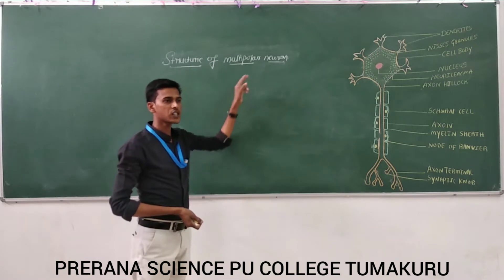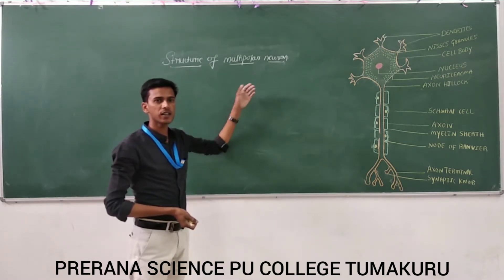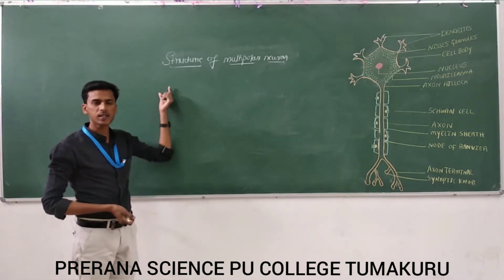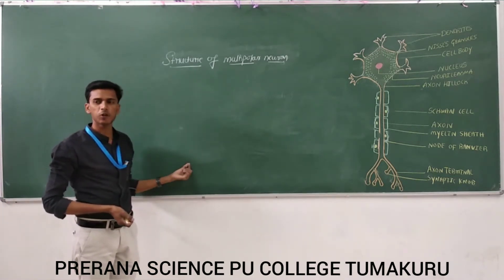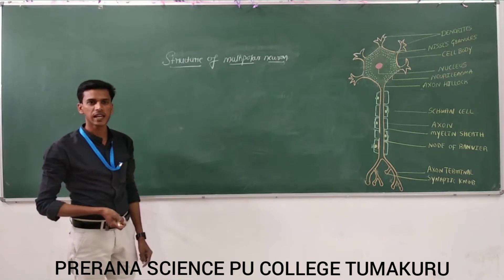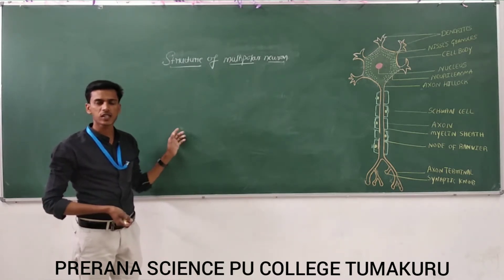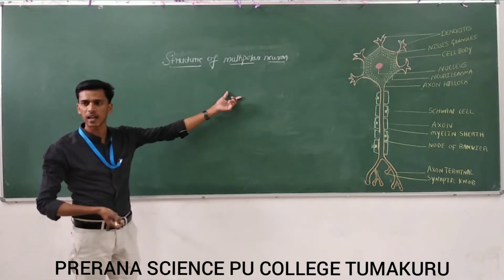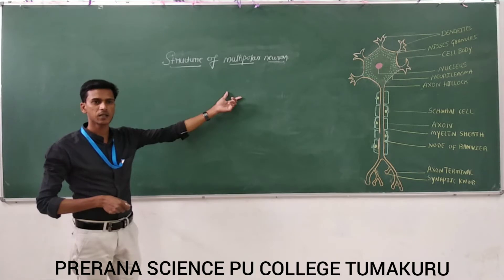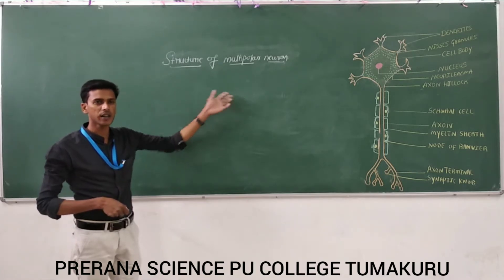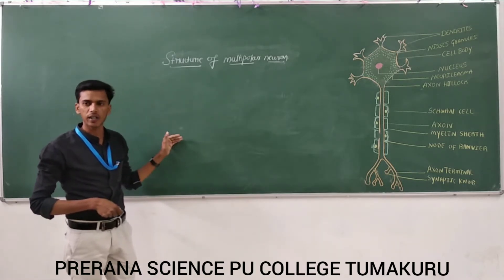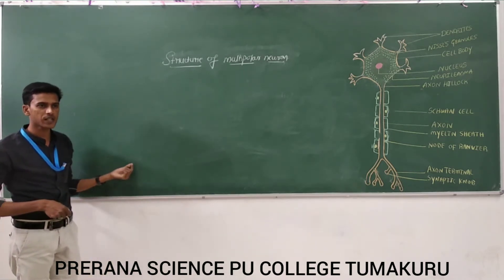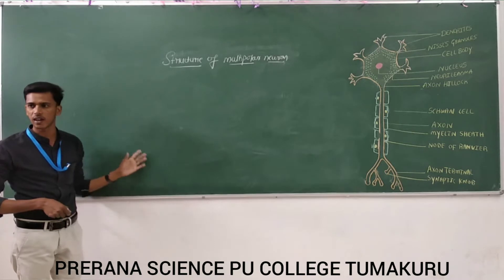So all of you know that the structure of neuron — we are studying the structure of neuron from your school days, right? So you know that the human body has so many systems. Basically human body is made up of cells. Since we are a multicellular organism, in our body there are so many systems — like the digestive system, respiratory system, nervous system, etc.